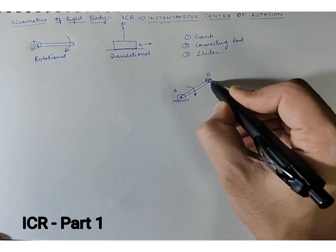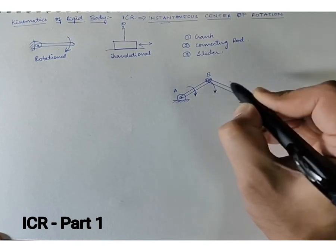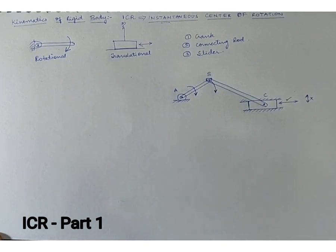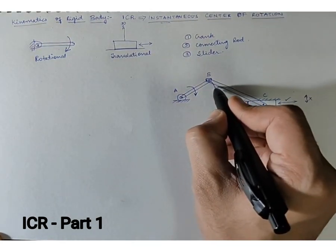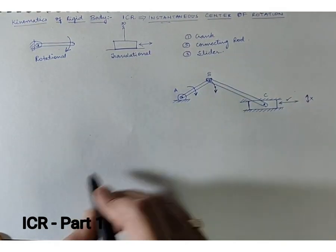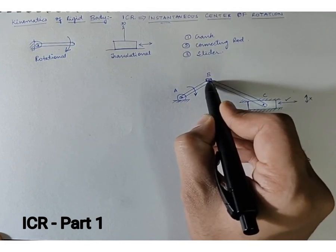But point B has to rotate because this is a rigid link. So as soon as it starts rotating, it will take its next position. Let's say somewhere over here, point B has moved in one horizontal dimension.